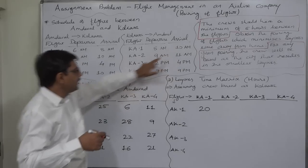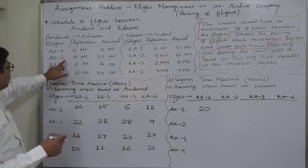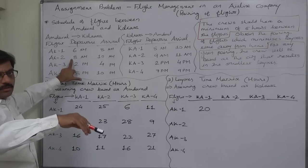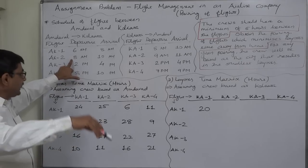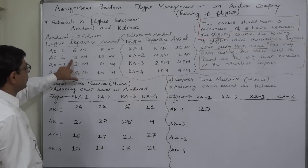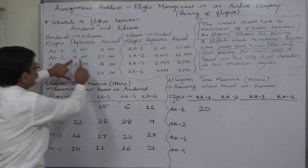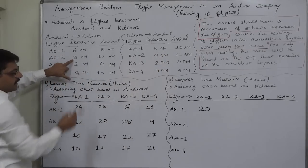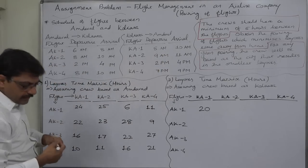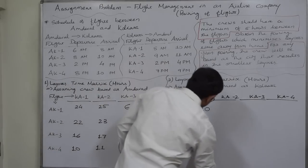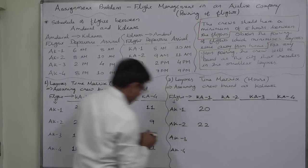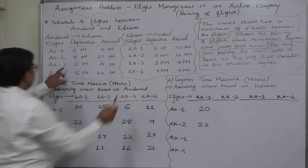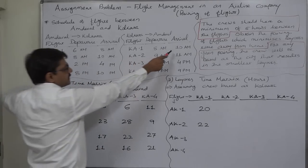If KA1 reaches Ahmedabad at 10 a.m. today and becomes AK2, it will start at 8 a.m. tomorrow. The layover time from 10 a.m. to 8 a.m. is 24 hours minus 2, so it will be 22 hours.